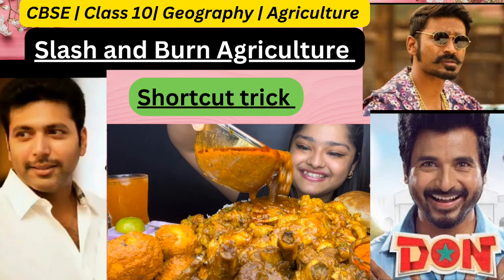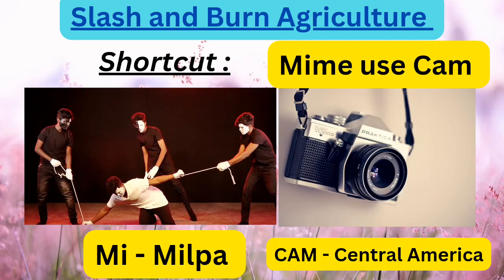Let's begin. The first shortcut is: to capture a mime, they use a camera — so 'mime camera.' M stands for Milba, and CAM stands for Central America. So Milba is the name of slash and burn agriculture in Central America.